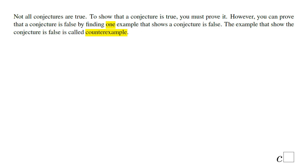Not all conjectures are true. To show that a conjecture is true you must prove it. However, you can prove that a conjecture is false by finding just one example that shows it is false — that example is called a counterexample.